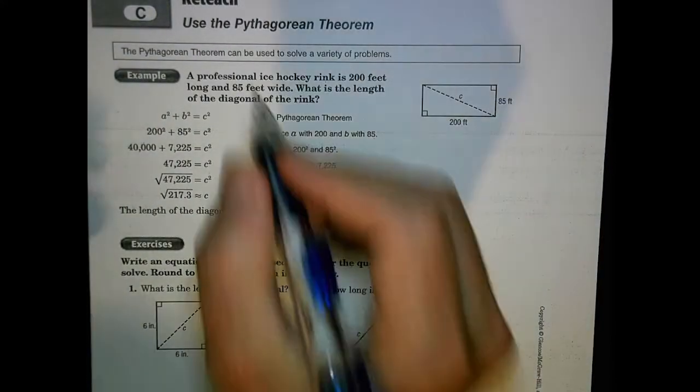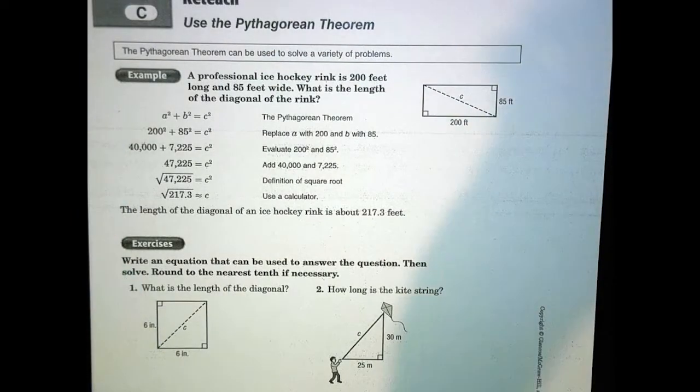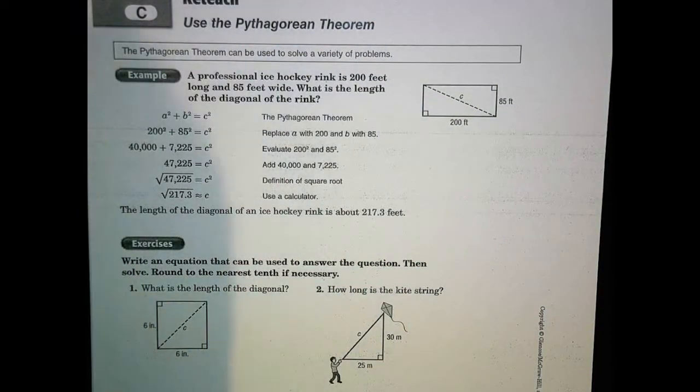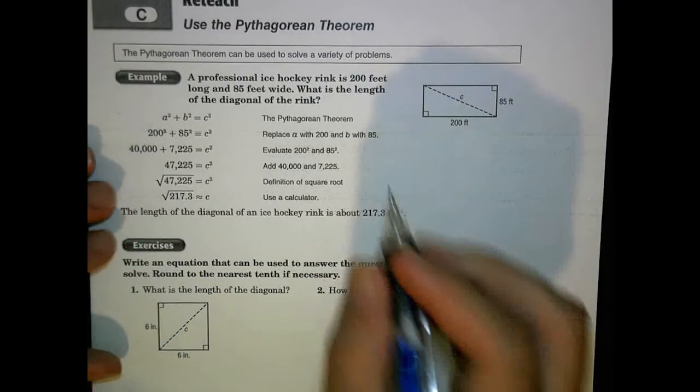Okay, so in this lesson here, we're going to be using what we learned in the last lesson, the Pythagorean Theorem, to solve some problems, which is really what you want to be doing with the theorem. It's not about just plugging in a squared plus b squared equals c squared and making it work. It's using it and applying it to something.